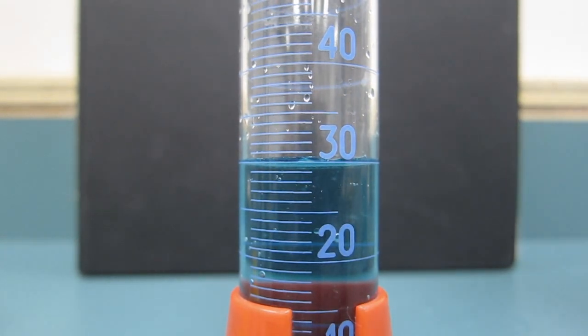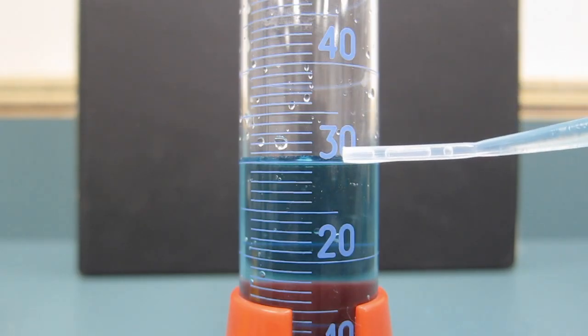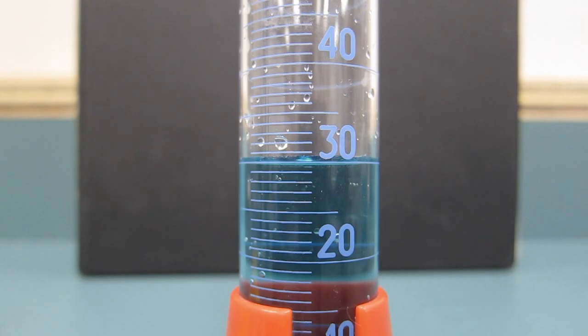And the bottom of the meniscus is just slightly underneath of that, actually. The biggest mistake people make is not getting at eye level and not reading from the very bottom of the meniscus. I could probably even go a tad higher. Notice that the upper part of the water is actually above the 30, though.